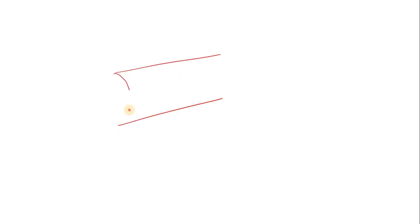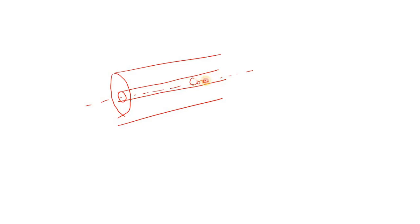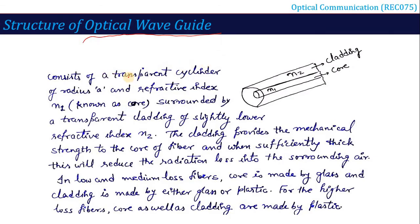When we talk about Optical Waveguide, it looks like a cylindrical part. It consists of a transparent cylindrical core of radius A, having a refractive index of N1. This is supported by a surrounding medium called cladding, which has a refractive index of N2. It is always known that N1 must be greater than N2 — the refractive index of the core is always greater than that of the cladding.